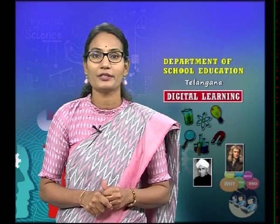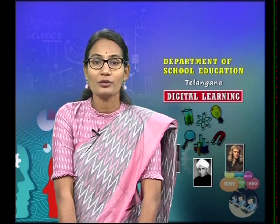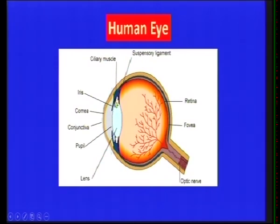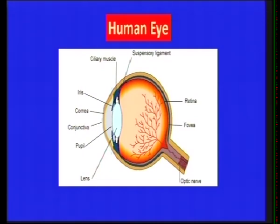Now I'm going to explain how the human eye works. The eyeball is almost spherical in shape. The front portion is more curved and covered with a transparent protective membrane called the cornea. The eye lens is hard in the middle and softer toward the edges. These are the iris and the ciliary muscles. The retina is where the image is formed, and it is connected to the optic nerves which send signals to the brain. When there is more light, the pupil contracts with the help of the iris to prevent excess light from entering.